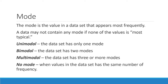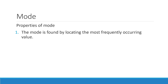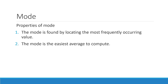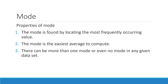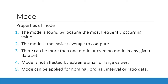We just need to look for the observations that have the most frequency. Properties of mode: the mode is found by locating the most frequently occurring value; the mode is the easiest average to compute for ungrouped data; there can be more than one mode or even no mode in a dataset; mode is not affected by extreme or large values; and mode can be applied for nominal, ordinal, interval, and ratio data.